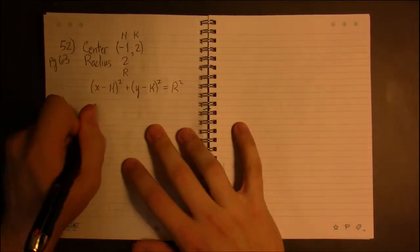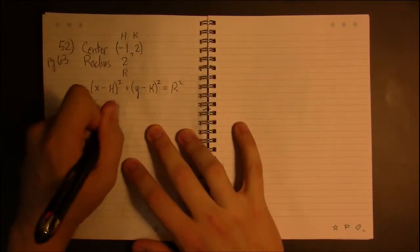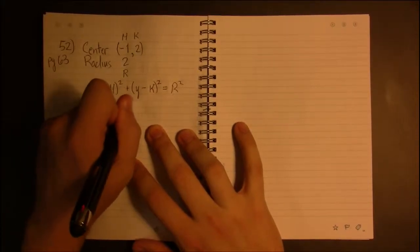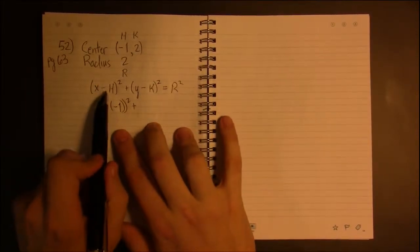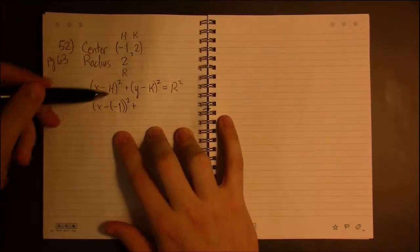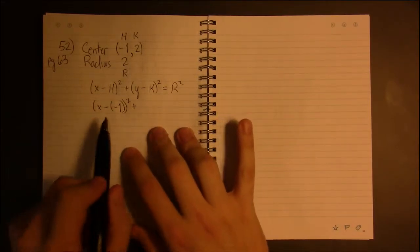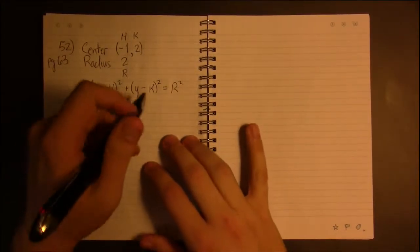R squared. So this becomes X minus... Again, watch out for these negatives. I've got a minus in the formula and H has a minus in it. That's two negatives and they have to be here, otherwise you're going to get the wrong answer.